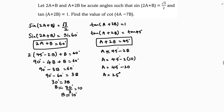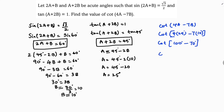Now I need to find cot(4a − 7b). Substituting: 4×25° − 7×10° = 100° − 70° = 30°. So we need cot(30°). From the trigonometry table, cot(30°) = √3. Therefore, cot(4a − 7b) = √3.